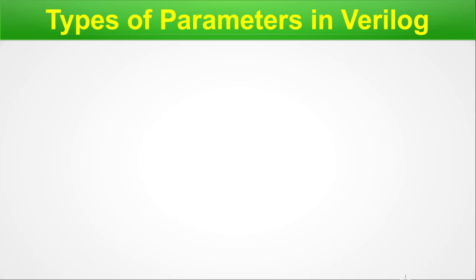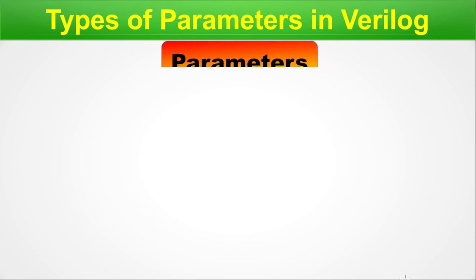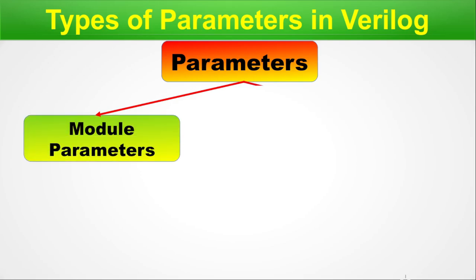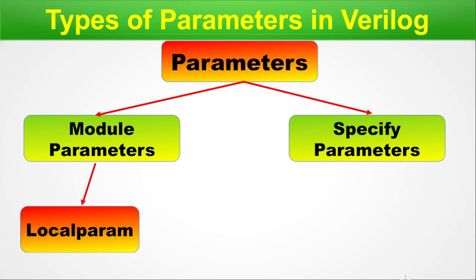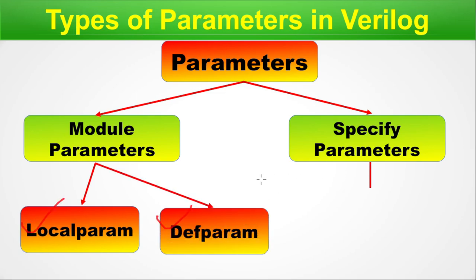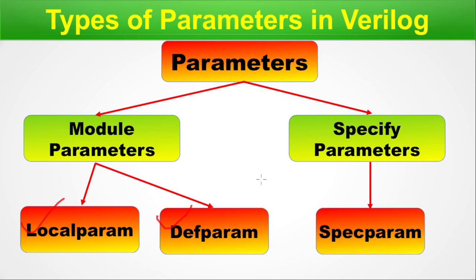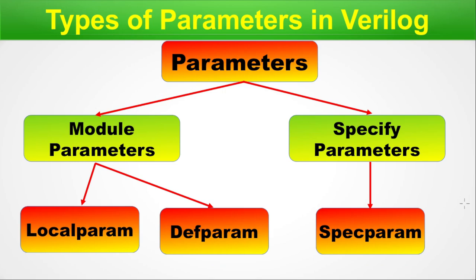Parameters in Verilog can be divided into two broad categories: module parameters and specify parameters. Module parameters can be further subdivided into two categories: localparam and defparam. The specify parameter has only one subdivision called specparam. So at the leaf level we have localparam, defparam, and specparam. We will go through examples of all of these.